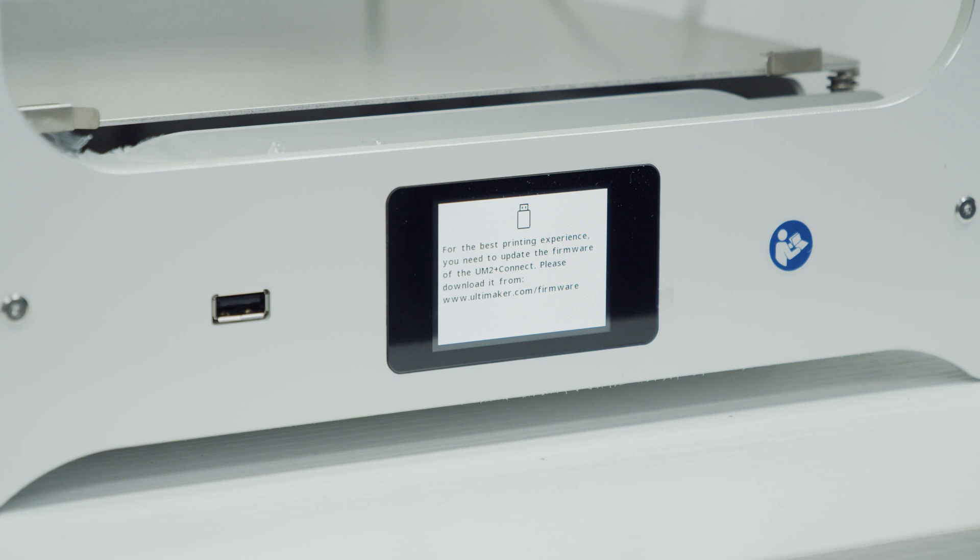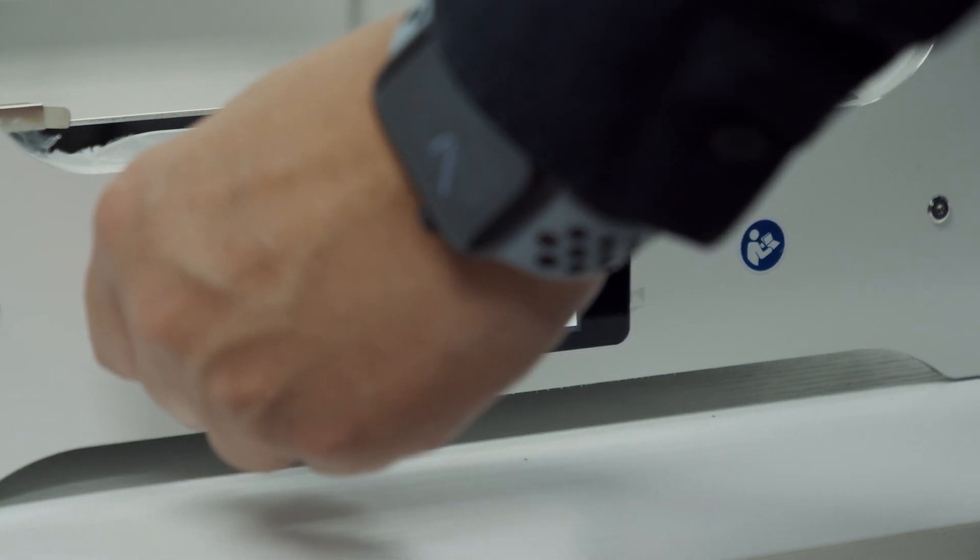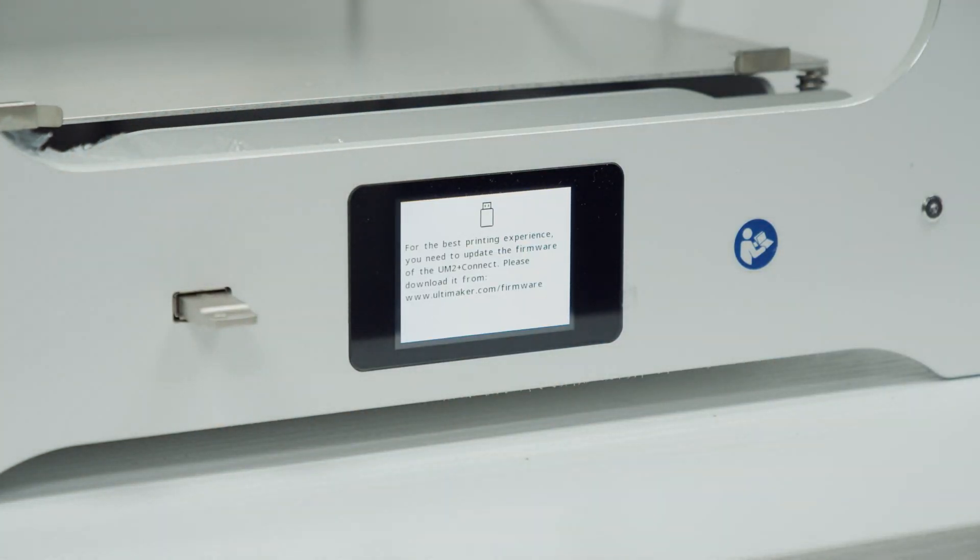When you turn the printer on, you may see a screen saying that you need to update your firmware. All you have to do is download the latest firmware to a flash drive and put the flash drive into the printer. It will automatically see that file and start the update. We will put the link in the description where you can download that.